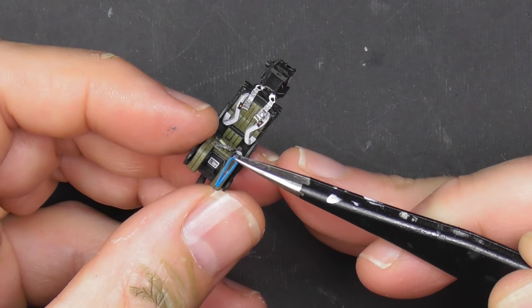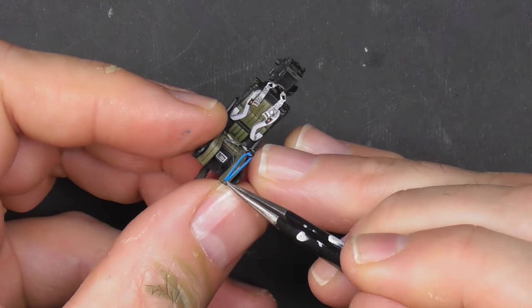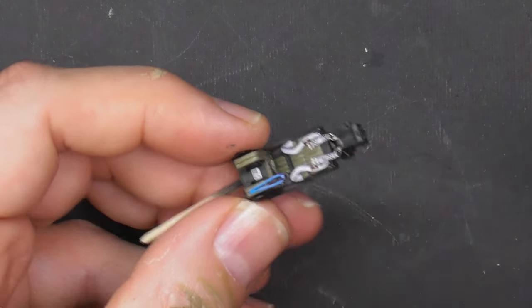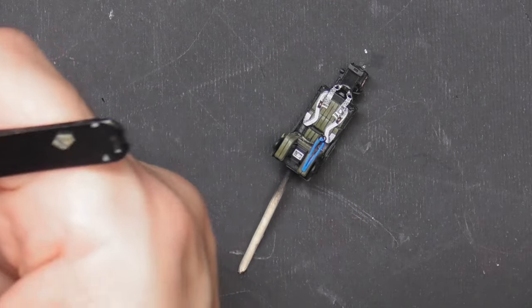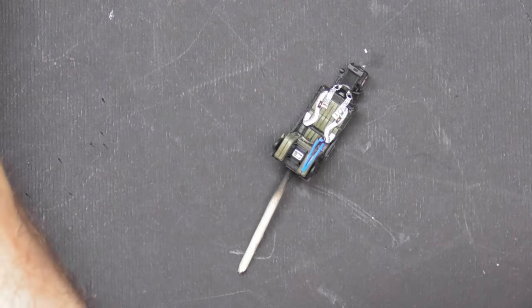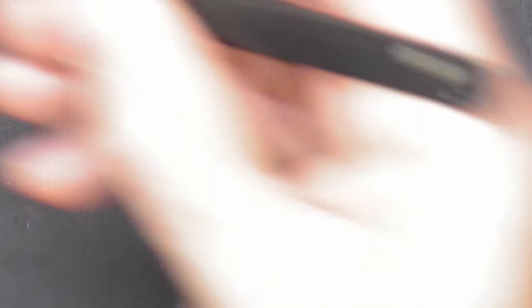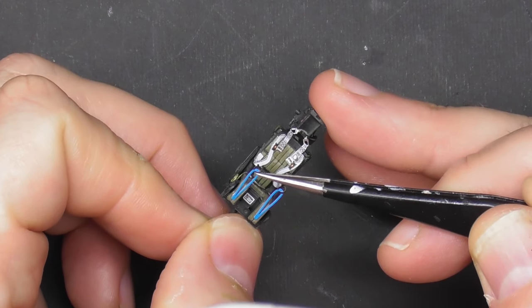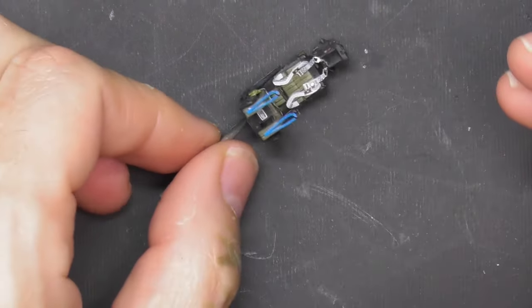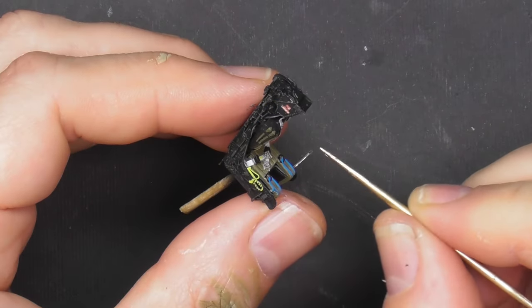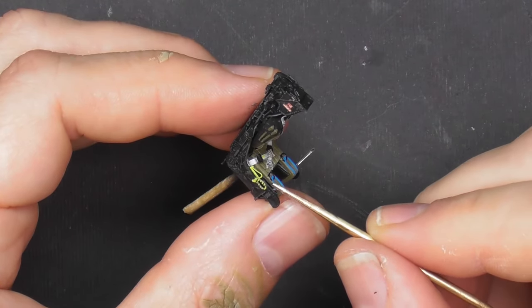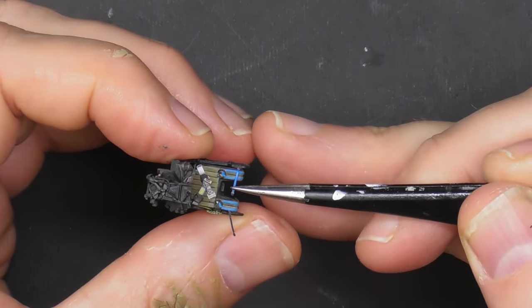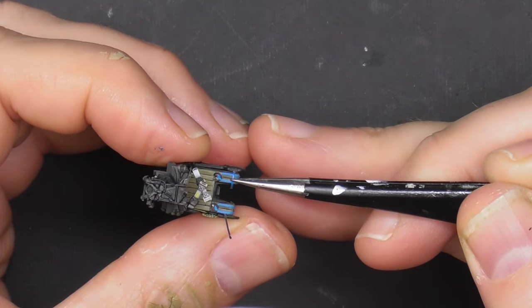These are the leg restraints. Quite often companies will forget these, so I tend to make them from scratch. But Brassin included them on this one which is good news. So what these do is you have some metal rings on your G pants called leg restraint garters. The leg restraints go through those loops and then plug into the seat. Then when you bang out and the seat moves up the rail, they tuck your legs in and it stops flailing injuries.